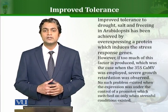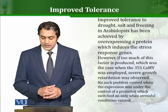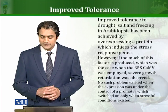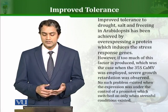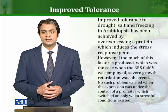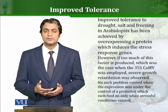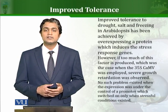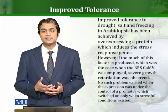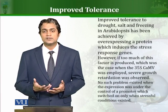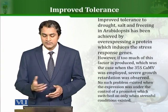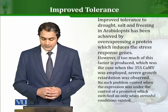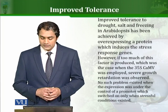There are many more examples; we are only quoting a few. Improved resistance to drought, salt, and freezing in Arabidopsis has been achieved by overexpressing a protein which induces the stress response genes. Many genes are involved that respond against certain stresses — drought, high salt concentration, and freezing temperatures. Arabidopsis thaliana is the plant of choice for molecular experiments because it is easy to handle and well understood. However, if too much of this factor is produced, if the gene gives too much expression, severe growth retardation was observed.